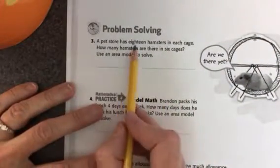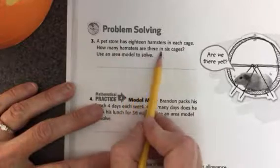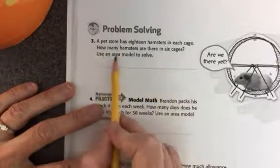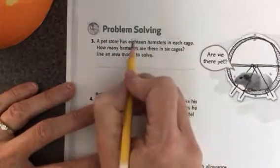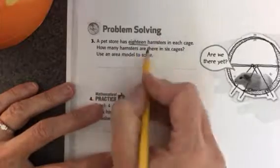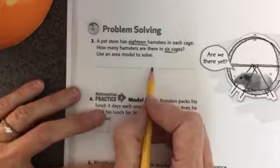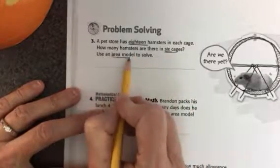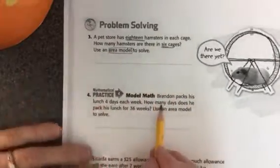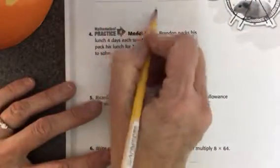A pet store has 18 hamsters in each cage. How many hamsters are there in six cages? Use an area model to solve. I know that there's 18 hamsters and there are six cages. These are equal groups, so I'm multiplying. So I'll write 18 times 6, and then I'll use an area model to solve it.